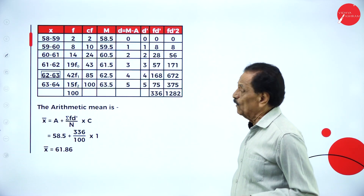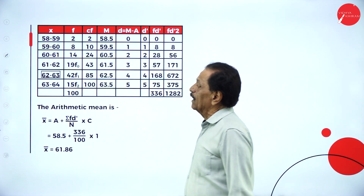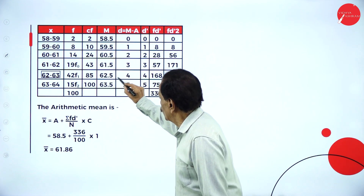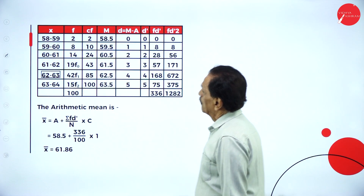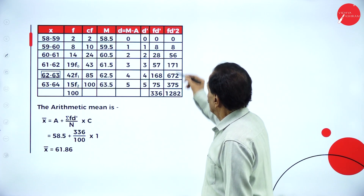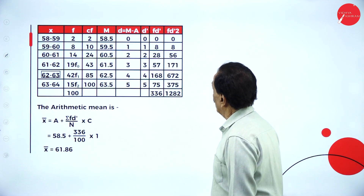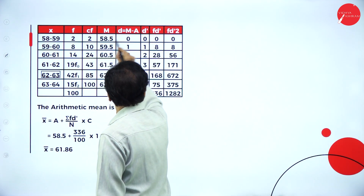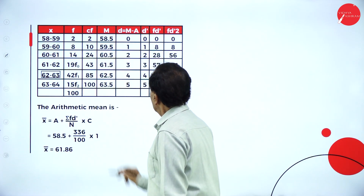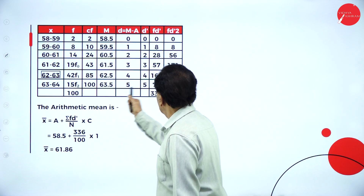Take the mid values: 58+59 divided by 2 = 58.5; 59.5; 60.5; 61.5; 62.5; 63.5. D dash: first number is 0, 1, 2, 3, 4, 5. Multiply by frequency to get FD dash: 2 into 0 = 0; 8 ones are 8; 14 twos are 28; 19 threes are 57; 42 into 4 is 168; 15 fives are 75.